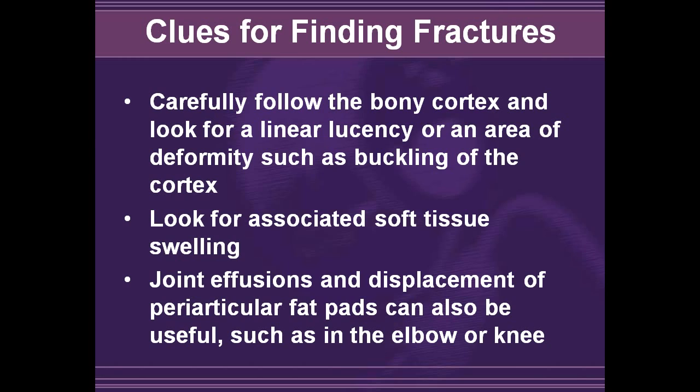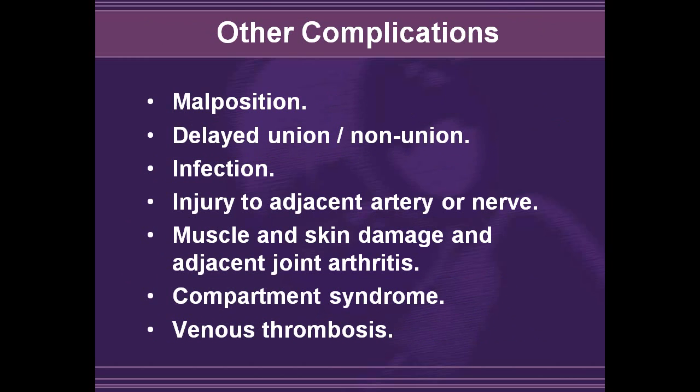Clues for finding fractures: carefully follow the bony cortex and look for a linear lucency or area of buckling or deformity. Look for soft tissue swelling and look for joint effusions. Displacement of the periarticular fat pads is very useful around the knee and elbow. Other complications that can occur include malposition or poor healing, delayed union or non-union where a pseudo-articulation develops, infection — particularly in open fractures — injury to adjacent nerve or artery, damage to muscle and skin, and early arthritis around a joint that has had a fracture extending into it.